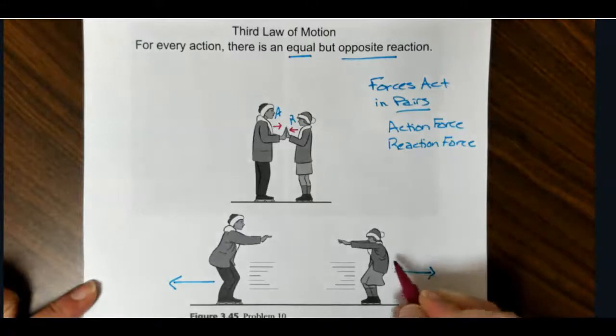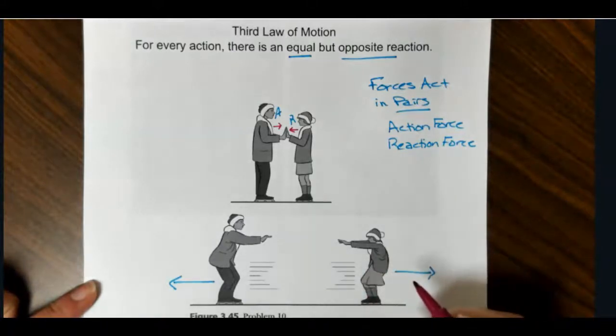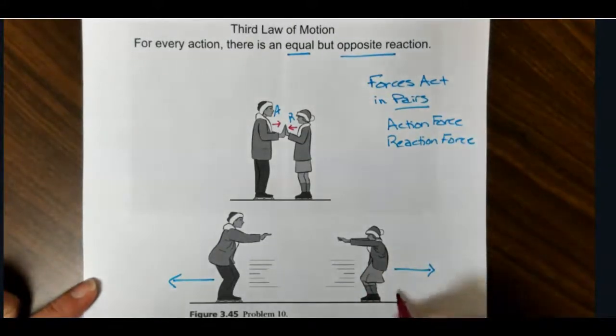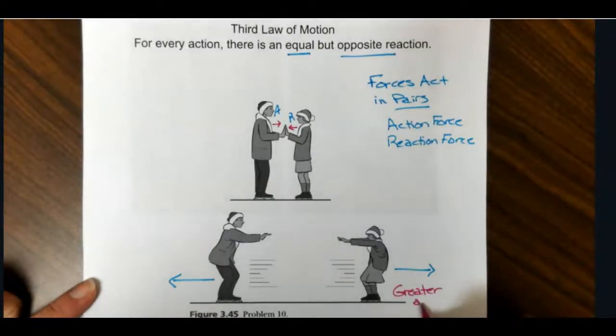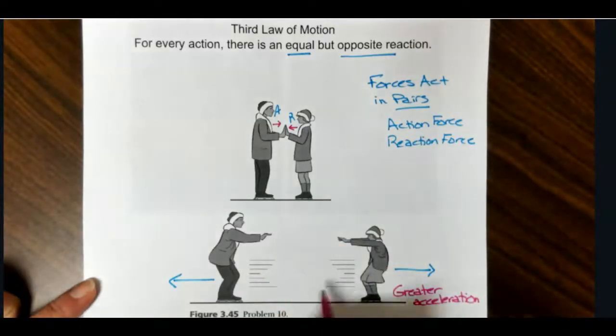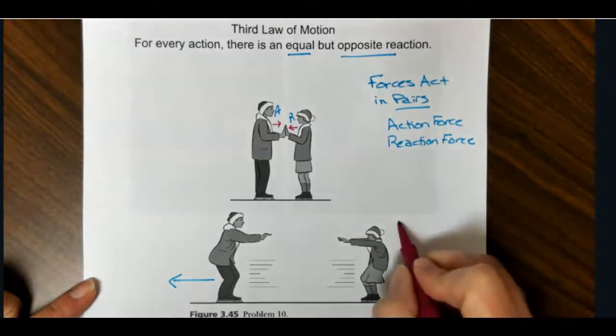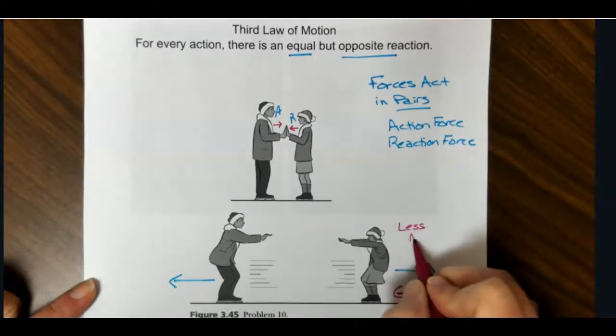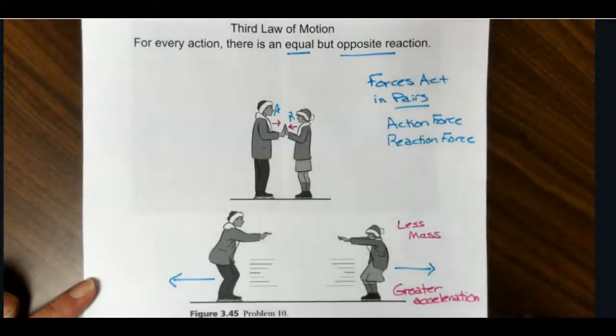Now, we're going to assume that the girl has less mass, so she's going to have greater acceleration. Going back to the second law, right? So if they applied the same force, they're both going to accelerate, but the object with less mass is going to have greater acceleration. However, they're both propelled backwards.